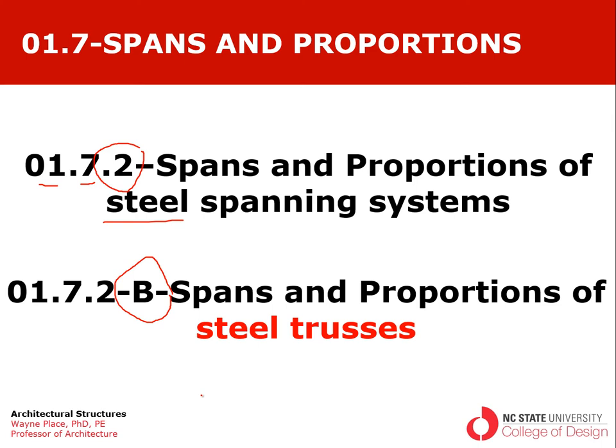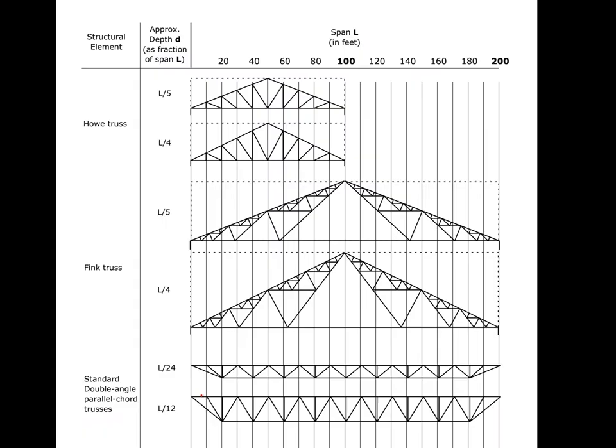Trusses are typically used as an alternative to beams whenever spans are long and the depth of the structure needs to be really deep, and the very thin, deep sheet web material of a solid web beam becomes too vulnerable to buckling and is not the most efficient way to carry the load.